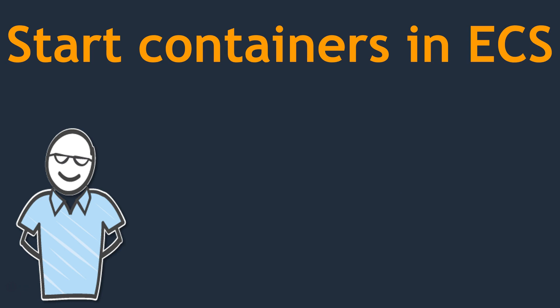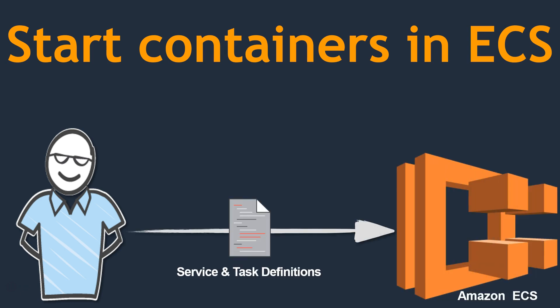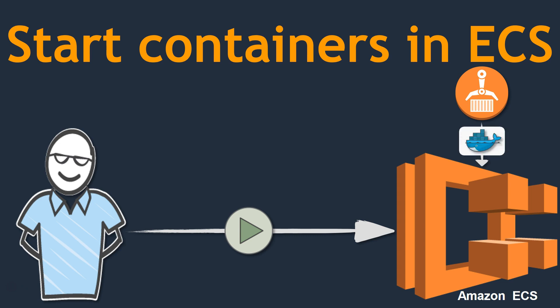The ops team comes in and says you have a service, and under that service there are certain tasks that need to be run. This is the definition document, and you give this document to your ECS cluster. The cluster is going to start the service — when it starts, it will pull the latest image from the ECR and start the services and give you a health check.